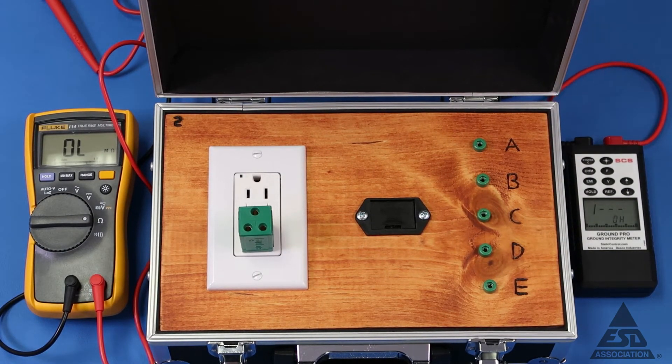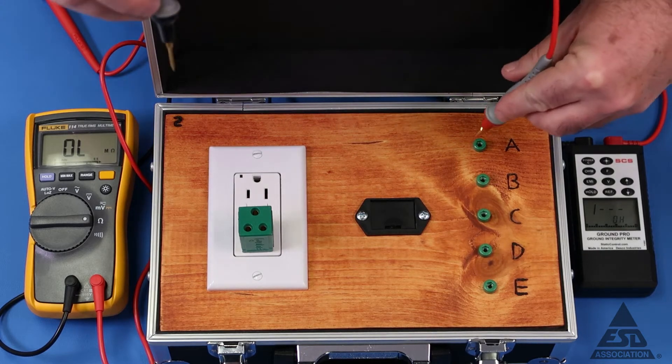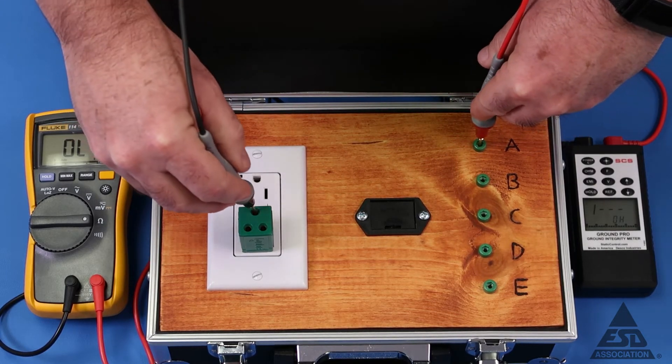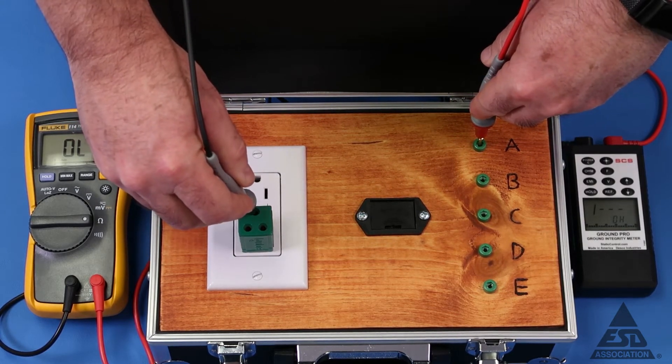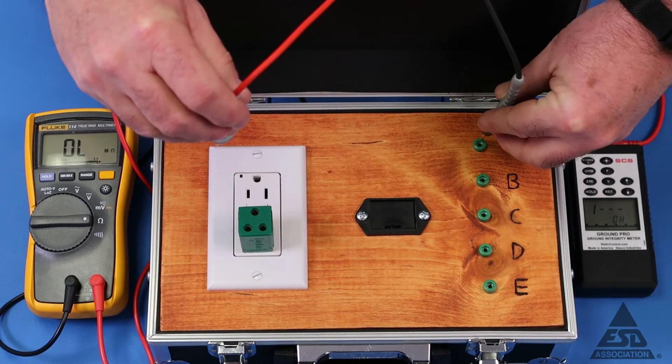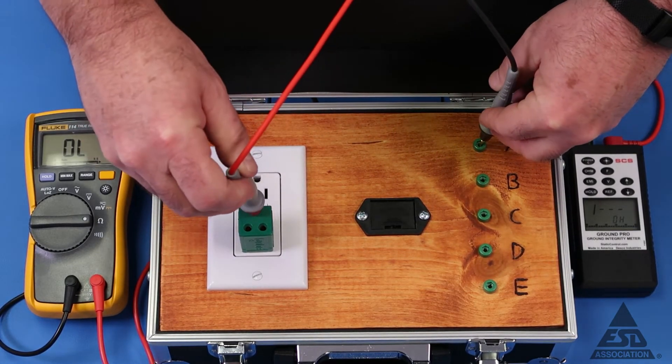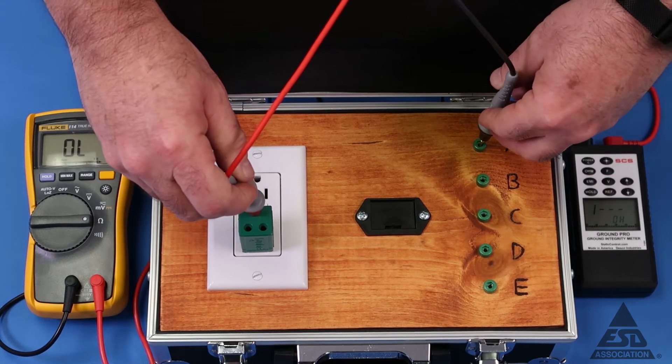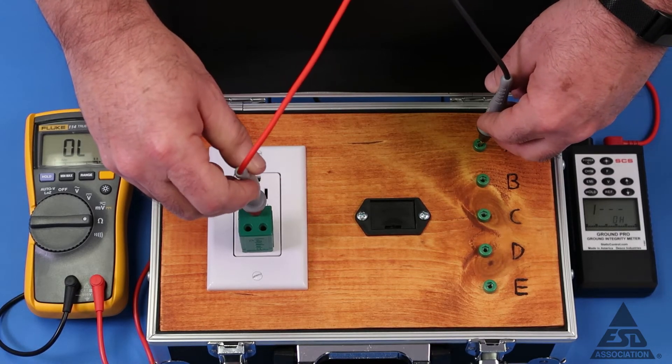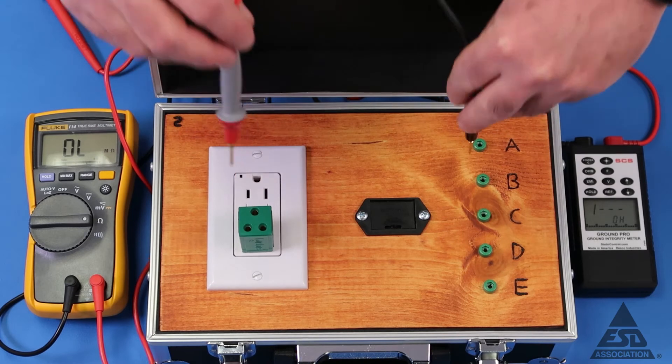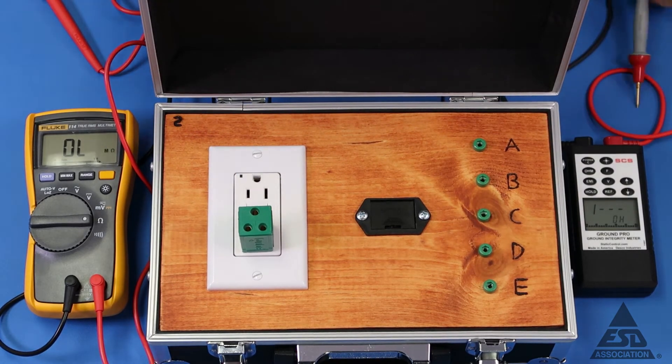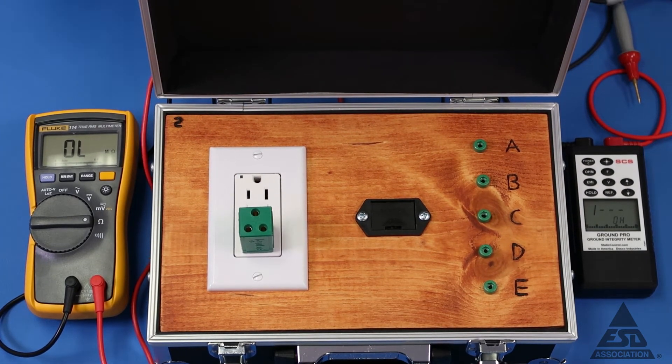Now with the impedance meter, still in overload condition. And still in an overload condition. In this case, there's an open, so both meters are measuring correctly an open circuit. Now we're going to move to measurement B.